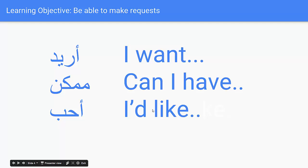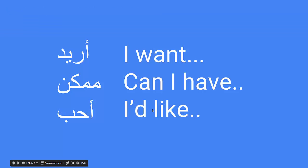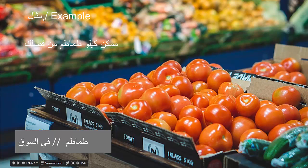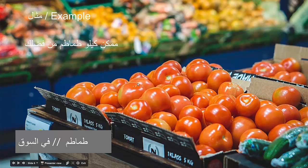As an example: mumkin kilo tomatin min fadlak — that's fadlak if you're speaking to a male, and fadlik if you're speaking to a female. We can also change mumkin to say aw-reet — I want — aw-reet kilo tomatin min fadlak. And finally you could say aw-hibb — I'd like — aw-hibb kilo tomatin min fadlak — I would like a kilo of tomatoes please.